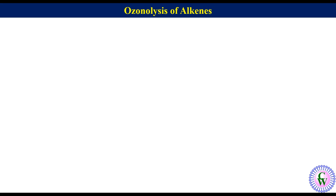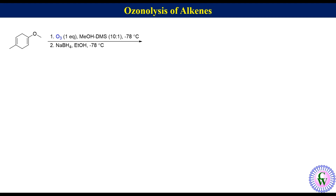Let's have an interesting example in which there are two different alkenes and the molecule is treated with one equivalent of ozone in dichloromethane-dimethyl sulfide. After that, the product formed is treated with sodium borohydride in ethanol. In such a situation, the more electron-rich alkene reacts selectively. So in the given reaction, the alkene with the methoxy group will react.